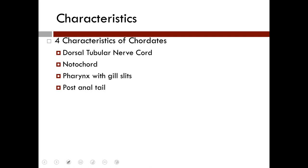The third characteristic is that chordates have a larva or embryo with a muscular post-anal tail — an appendage that extends posteriorly to the anus, hence the name post-anal tail. It is an extension of the notochord that extends past the anus.